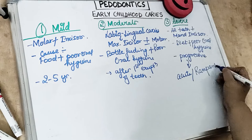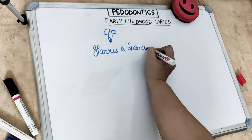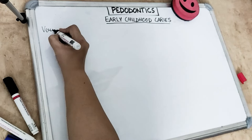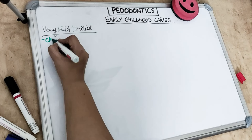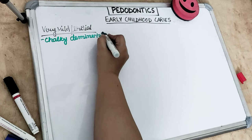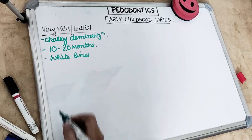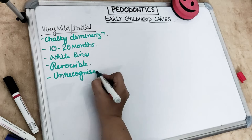According to Harris and Garcia-Godoy in 1999, clinical features of ECC can be classified into stages of development. Stage 1 — very mild or initial — shows chalky, opaque demineralization lesions on smooth surfaces, seen between 10 to 20 months of age. A distinctive white line is present. These lesions are reversible at this stage but are frequently unrecognized by parents.